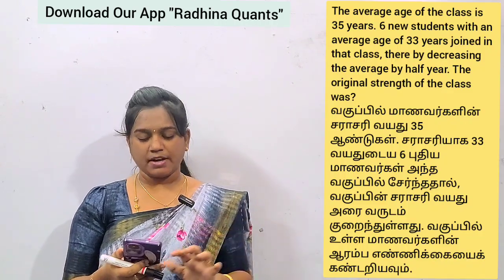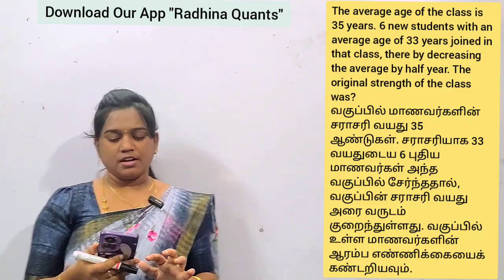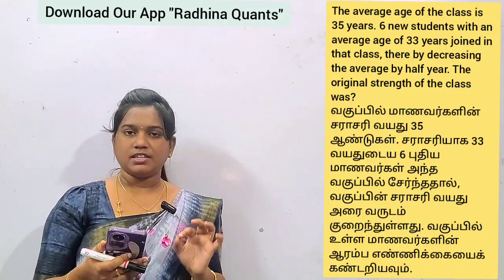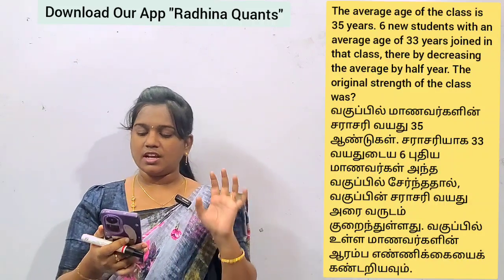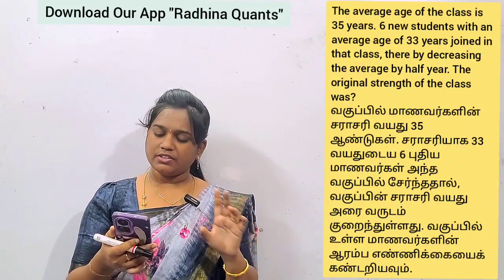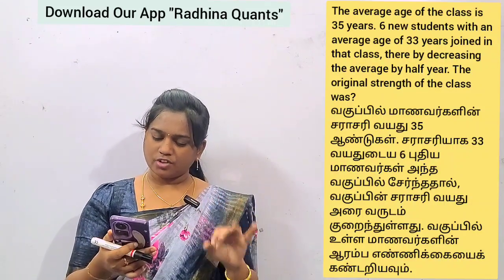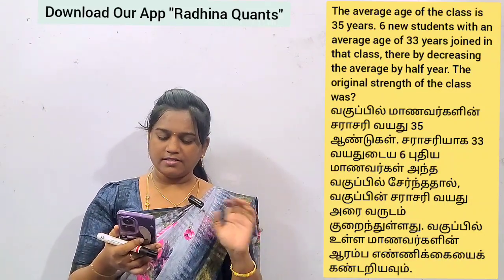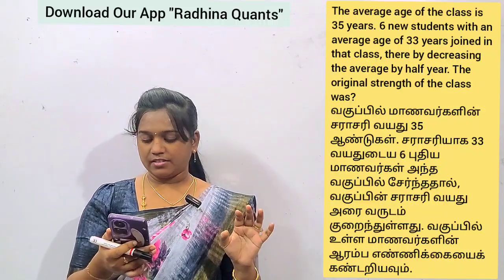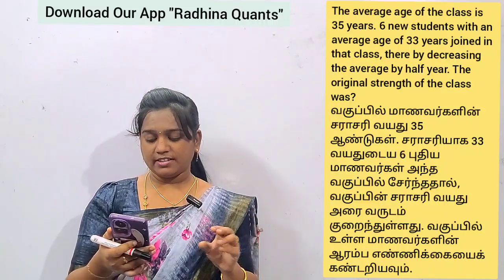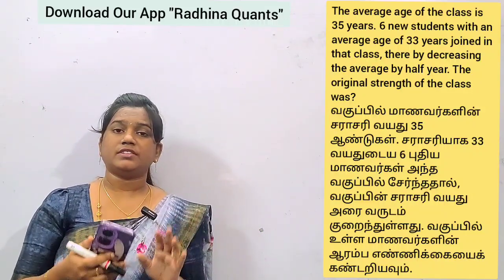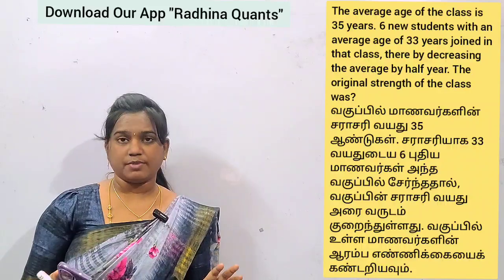Let me show you the question. The average age of a class is 35 years. Six new students with an average age of 33 years joined that class, thereby decreasing the average by half a year. Find the original strength of the class.